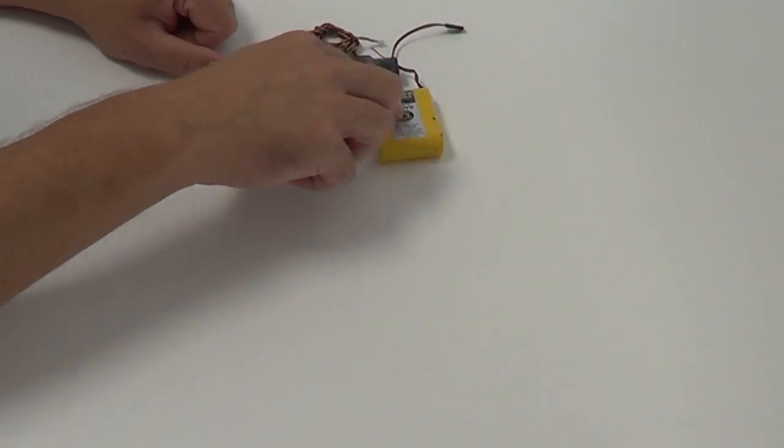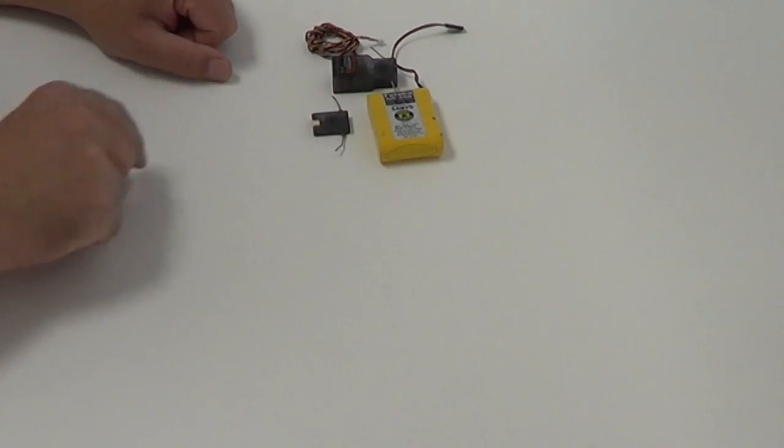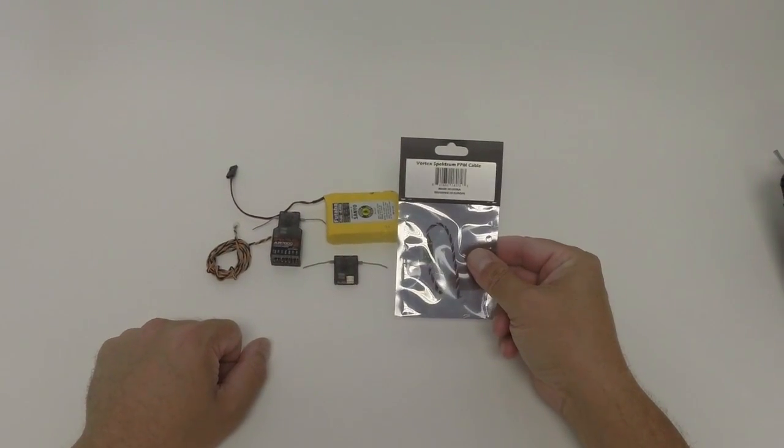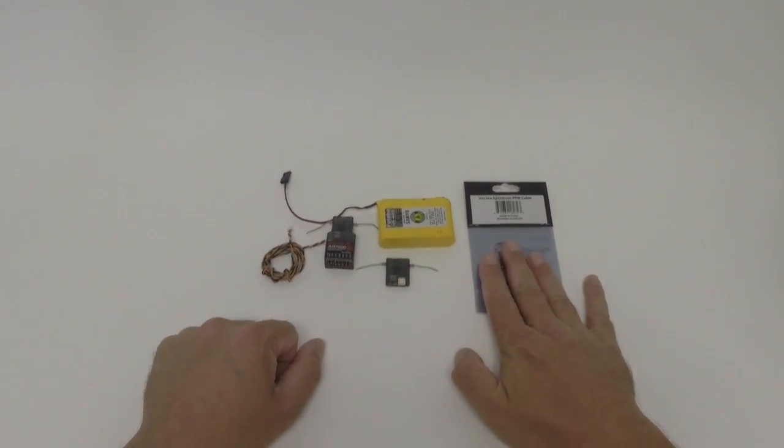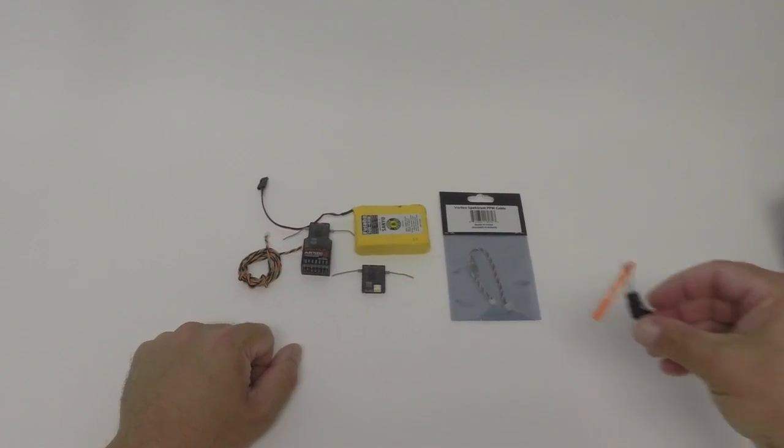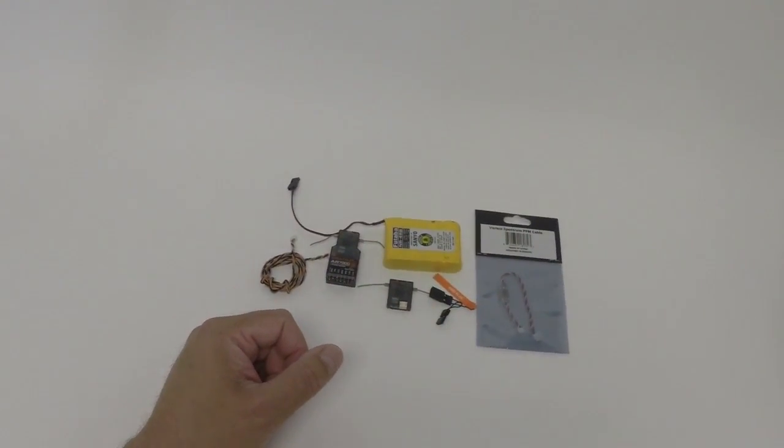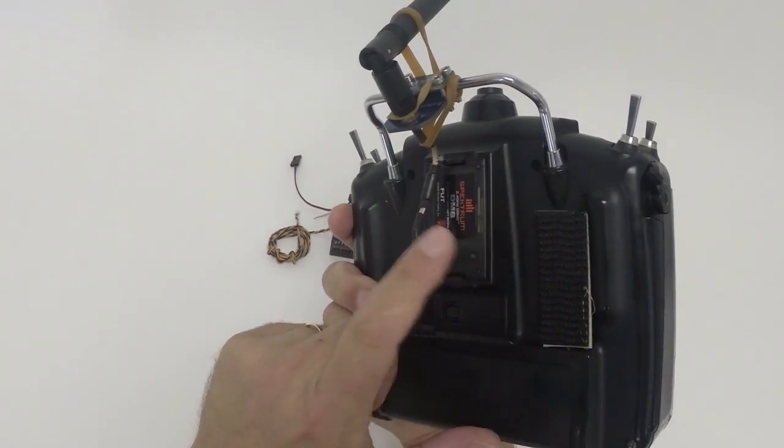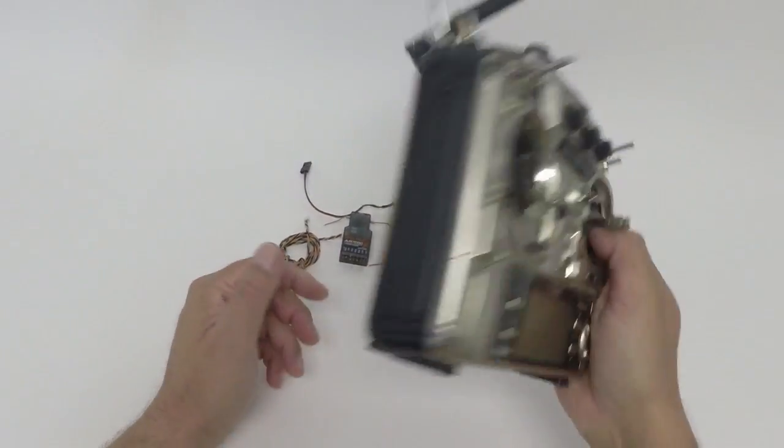We will need a battery to power the Spectrum Satellite Receiver together with the AR7000, we will need a Vortex Spectrum PPM cable to connect the Satellite Receiver to the Vortex, we will need a bind plug, and we will need a radio which is Spectrum-compatible or has a Spectrum DSM module in the back.